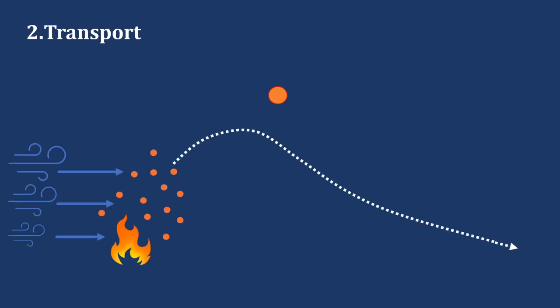Once the ember is lofted by the fire plume, it begins its wind-driven transport. Different forces act on the ember particle and influence its trajectory. These forces are affected by the wind speed and direction and also by the shape and size of the ember as well as the type of combustion it is experiencing.